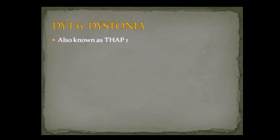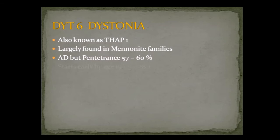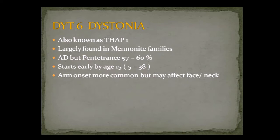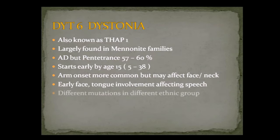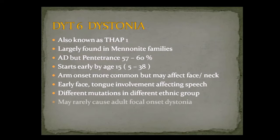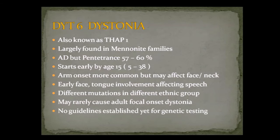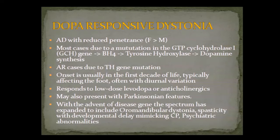DYT6 is a little bit similar to DYT1 but is a different mutation — THAP1 mutation — largely found in the Amish Mennonite population. Here the penetrance level is higher. It starts around the same age but can go up to 38 years. Arm onset is more common, and this one does affect more of the face and neck, severely causing dysphonias and oromandibular dystonia. The other mutation was a deletion, but DYT6 has many mutations that can cause this abnormality. It typically won't cause adult focal onset dystonias.